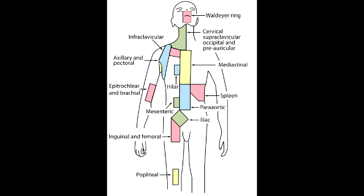What is the primary lymph node drainage site for the stomach? The stomach drains into the celiac lymph nodes. What is the primary lymph node drainage site for the duodenum and the jejunum? Duodenum and jejunum drain into the superior mesenteric lymph nodes.